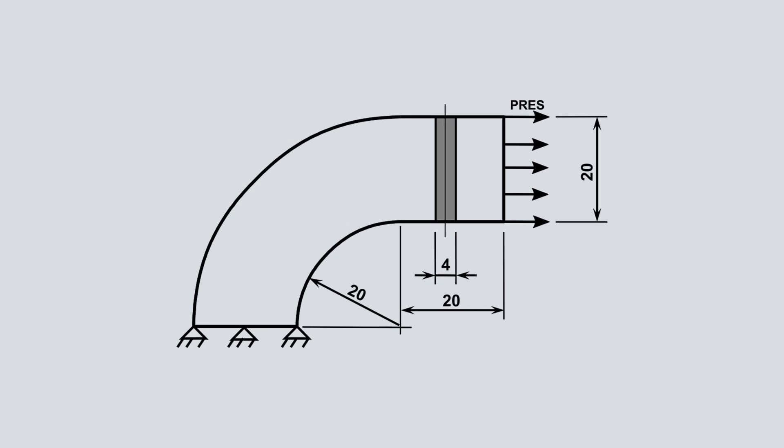In this example, I show you how to analyze this thin bracket using the GUI, or Graphical User Interface, of ANSYS Mechanical APDL, including the preprocessor module to generate the geometry and mesh, as well as to apply loads, boundary conditions, and material properties.